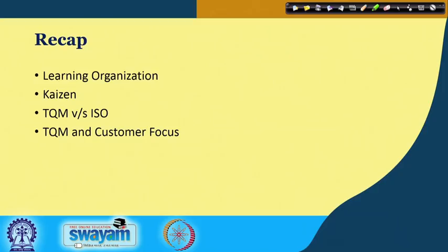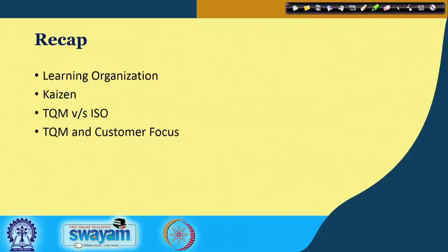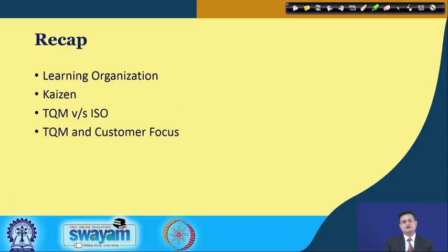Before we move on to the content of this lecture, let us have a small recap. In the last lecture, we have seen what is a learning organization and the prerequisites of a learning organization. If your organization is struggling on many day-to-day issues, then it is difficult for it to opt for any kind of continuous improvement program. We also saw the importance of Kaizen, small improvements, TQM versus ISO, and TQM and customer focus.